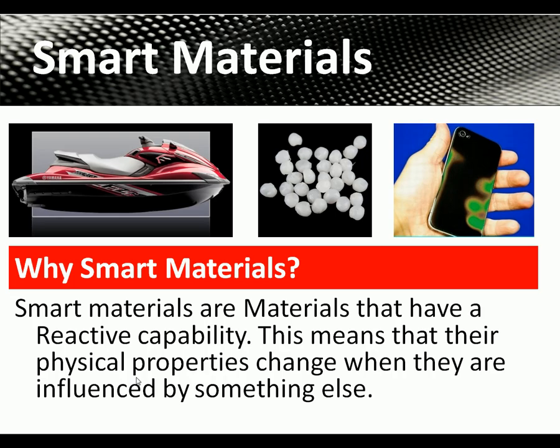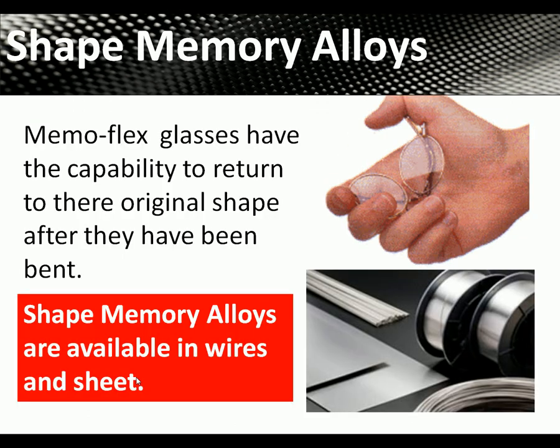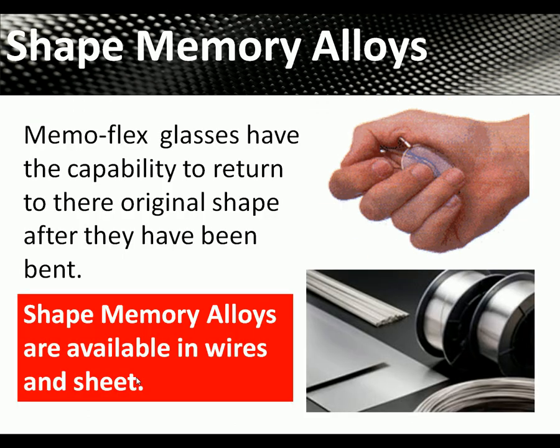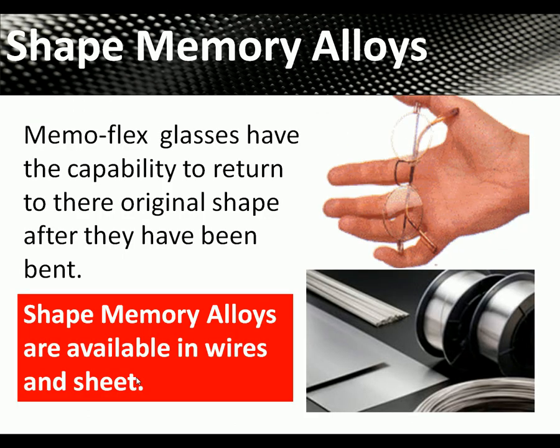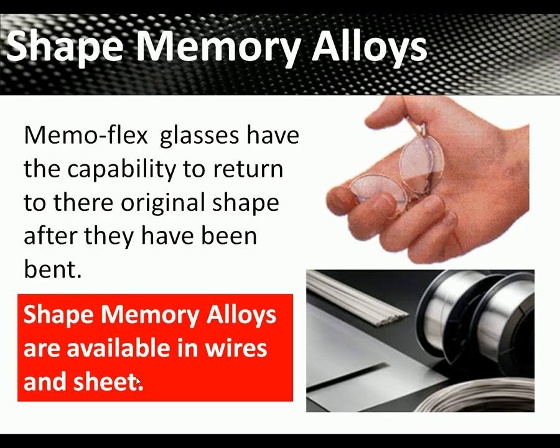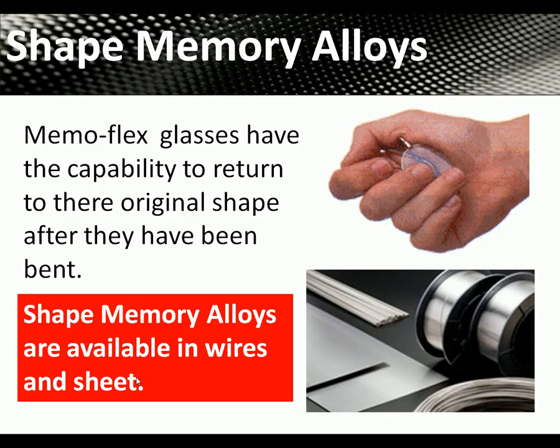Now we're going to look at smart materials. Smart materials have a reactive capability — when something happens to them, they do something else. Their physical properties change when influenced by an external factor. The first smart material is SMA, shape memory alloy.